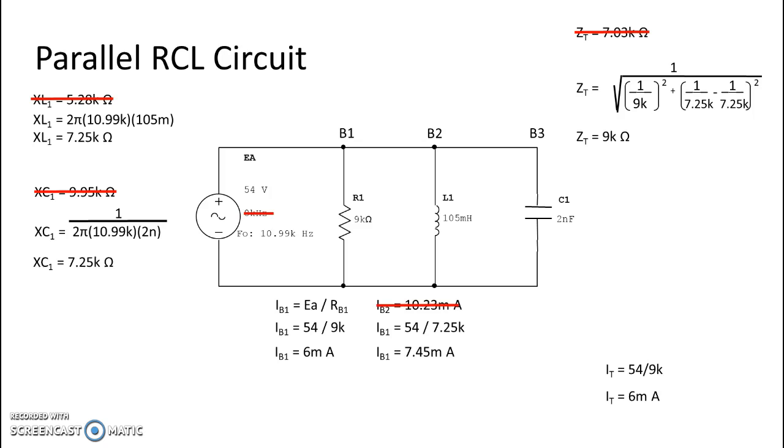All right. So the current that they do have is 7.45 milliamps. And of course, that's the same. For this one, that current formula, you're going to end up with 6 milliamps, which is total current because the other two are going to cancel each other out.